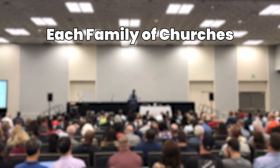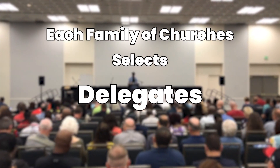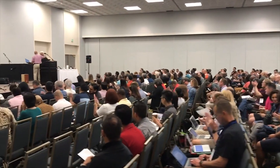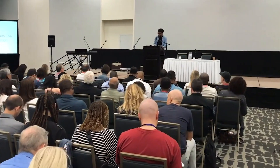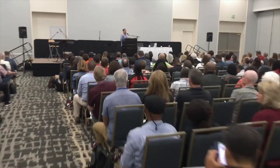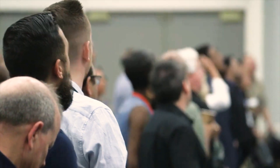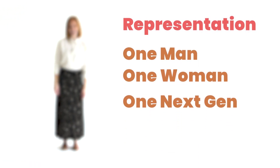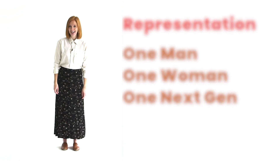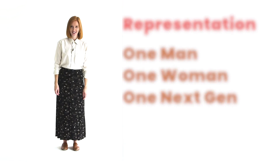How is each family of churches represented in decision-making and meetings? Aside from the chair couples, each family of churches selects commended disciples to serve as delegates. These representatives attend global meetings for ICOC leadership, create proposals for change, for action to build unity, and to increase mission effectiveness. They also promote global and local unity and work with the service teams. Each region is granted a minimum representation of one man, one woman, and one next-gen delegate. Additional delegates are added based on the size of the regional family of churches.